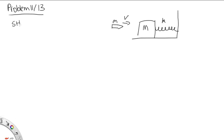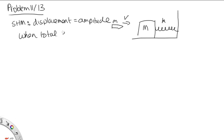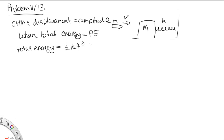When undergoing simple harmonic motion, the displacement equals the amplitude when the total energy is all equal to the potential energy — when there's no kinetic energy, when all the energy is stored in the spring. So if we know the total energy, it equals one-half k A squared, and this allows us to find A. So we need to find the total energy of this system.